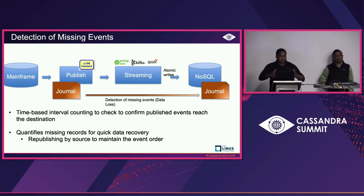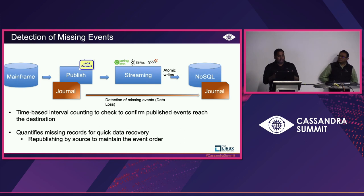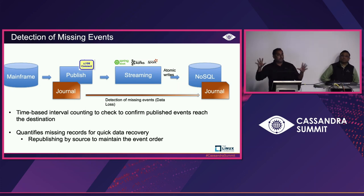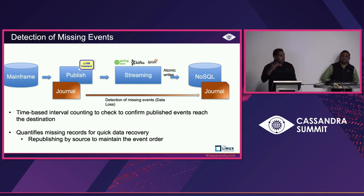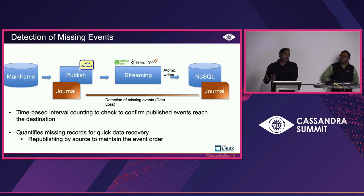We built a time-interval batch pipeline on Spark that checks every 30 minutes — configurable down to five minutes depending on criticality. It checks whether, if mainframe published a million events, a million events reached Cassandra. It doesn't do data validation; it just identifies data loss. Humans make errors, and even with all alerting enabled, someone might miss addressing some events. A missing transaction in Cassandra is a big deal for a customer — if a customer doesn't see a transaction, it's a serious issue.